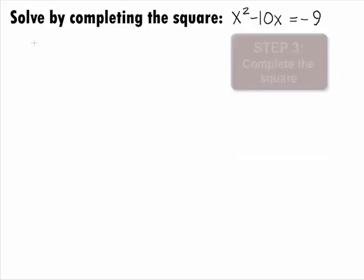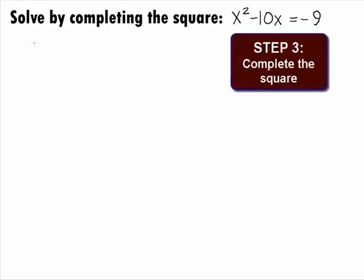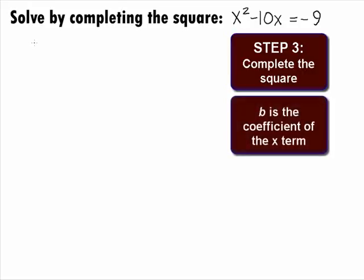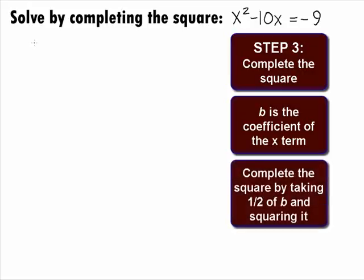In Step 3, we want to complete the square. We need a number to add to our x squared minus 10x so that we have a perfect square trinomial. We can find that number by using the idea that if we have x squared plus bx, where b is the coefficient of the x term, we can complete the square by adding the constant b over 2 quantity squared.